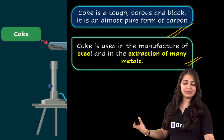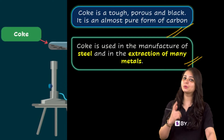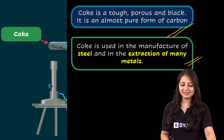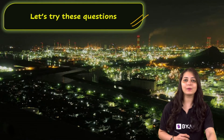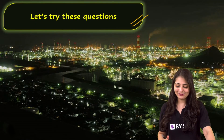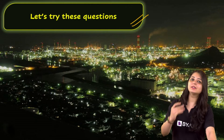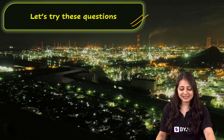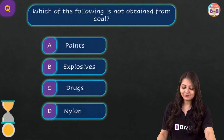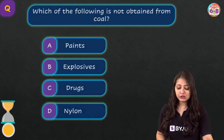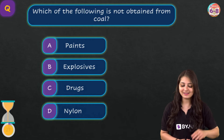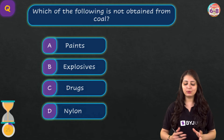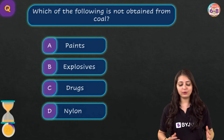These were the three products we get from coal through destructive distillation. Now it's time to solve some questions — I'll give you 30 seconds for each question. Question number one: Which of the following is NOT obtained from coal? Options: paints, explosives, drugs, or nylon.